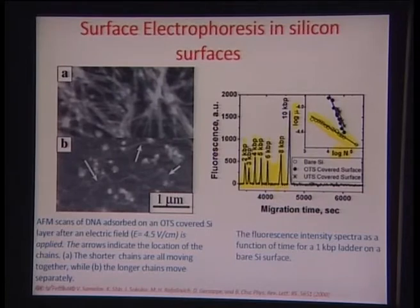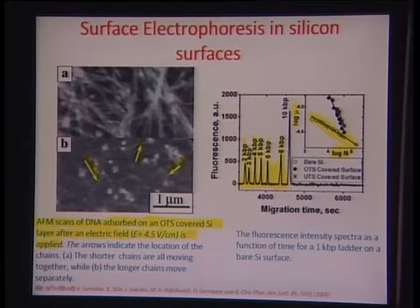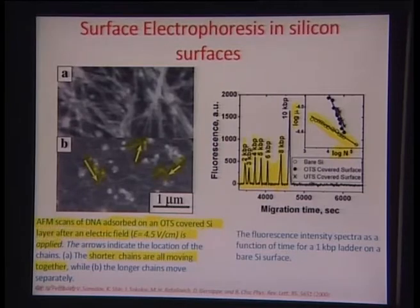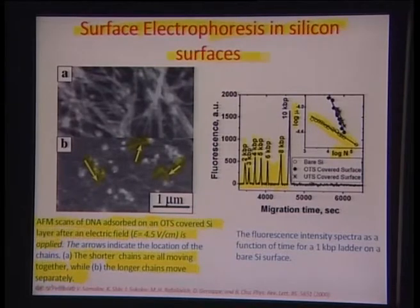Chu's group has also shown that you can detect with an AFM the DNA adsorbed on an OTS-covered silicon layer after an electric field of 4.5 volts per centimeter is applied. Arrows indicate the shorter chains and the way they are moving — the shorter chains are all moving together, and the longer chains move separately, as observed by Benjamin Chu's group. Very repeatable data on a surface of DNA has been recorded.